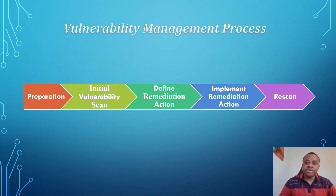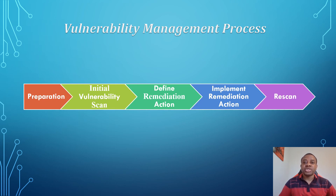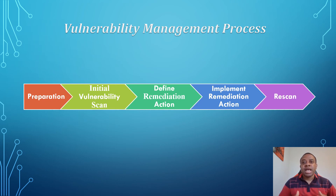The first phase is the preparation phase. This phase defines the scope of the vulnerability management process. Here you determine the type of scan to be conducted — whether against the external or internal network, or against the public-facing server or internal server. You also determine the IP address for the application or system that the scan will be conducted on.